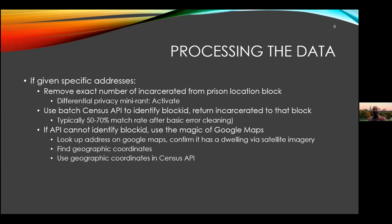If the API can't identify a particular block ID, we use the magic of Google Maps. You look up the address on Google Maps, confirm there's a building on that block that could be that address via satellite imagery. You right-click on Google Maps, get geographic coordinates for that exact location, and use those coordinates back into the census API — which can use geographic coordinates instead of street addresses — and the census API will give you a block ID. So one of the things our team has been doing is going through thousands of addresses, finding them on Google Maps, putting in the geographic coordinate, and getting a corrected address and block ID.